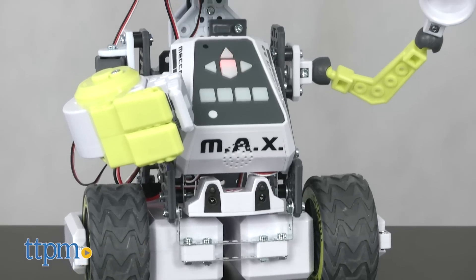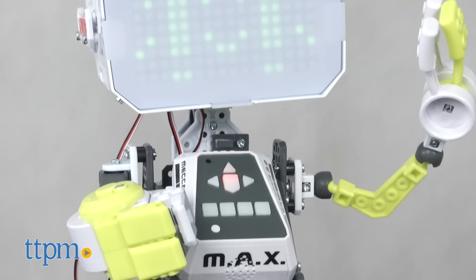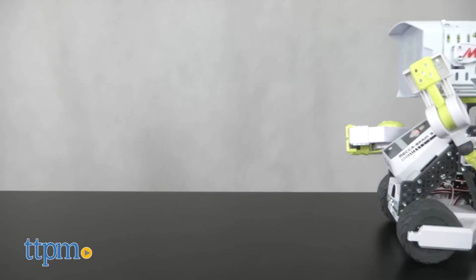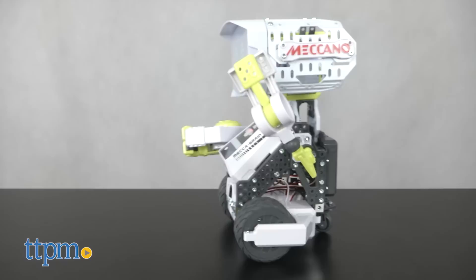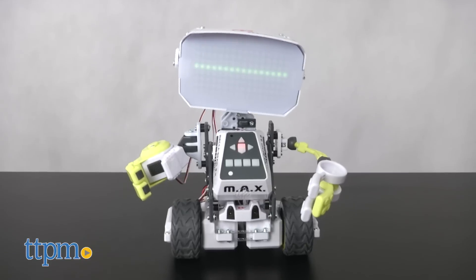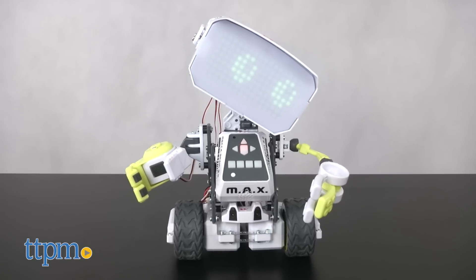Meccano is known for its robotic building sets for kids, and Max may be the best one yet. Combining artificial intelligence with customizable programming, it allows kids and adults to have more control through personalization. We're gonna have a great time. I'm ready when you are.